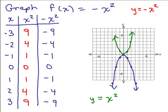Another way to graph f(x) = -x² is to turn your paper upside down, graph y = x², then turn it right side up again and you've got it.